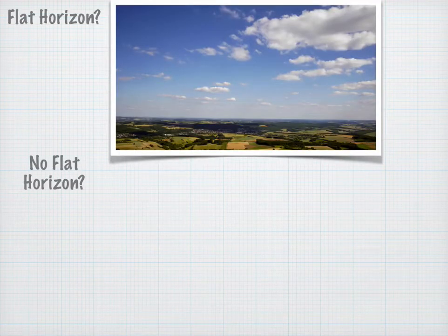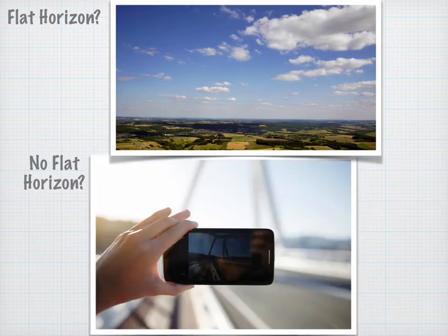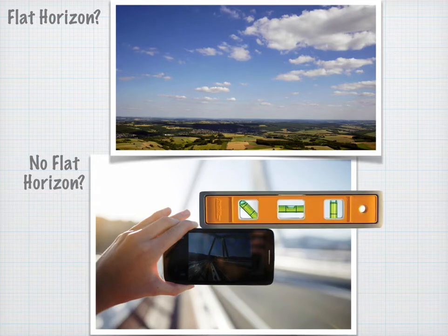If you have a flat horizon, that's great — you'll measure your angle from there. If you don't have a flat horizon, you can do a little trick with your cell phone or camera. Simply layer a carpenter's level on top to make sure your camera is absolutely horizontal.